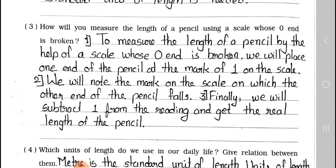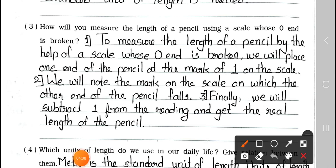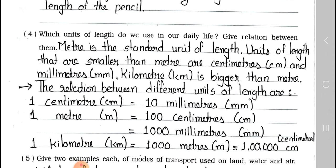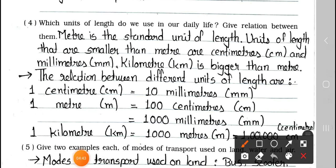Question 3: How will you measure the length of a pencil using a scale whose zero end is broken? Answer: Point 1 — Place one end of the pencil at the mark of 1 on the scale. Point 2 — Note the mark on the scale where the other end of the pencil falls. Point 3 — Subtract 1 from that reading to get the real length of the pencil.